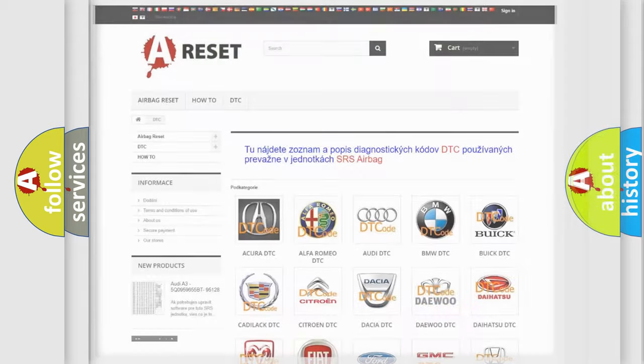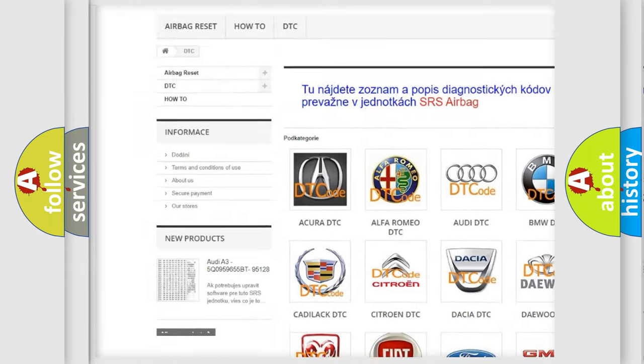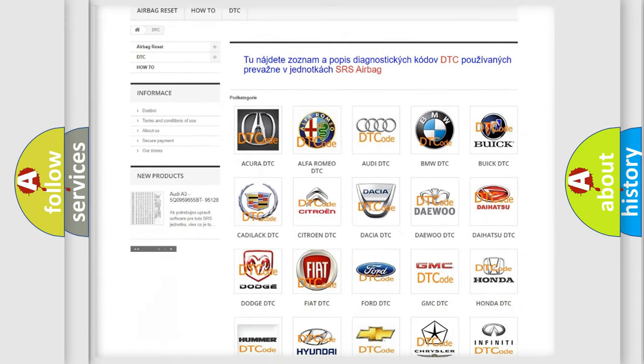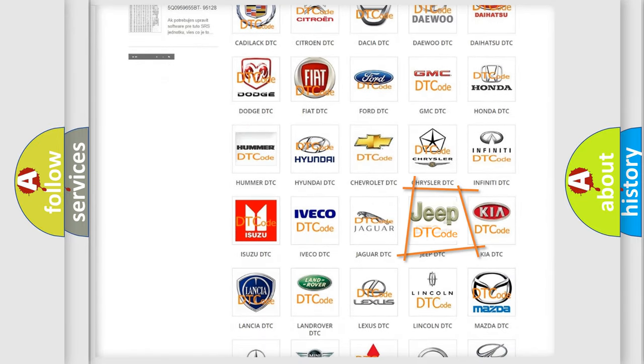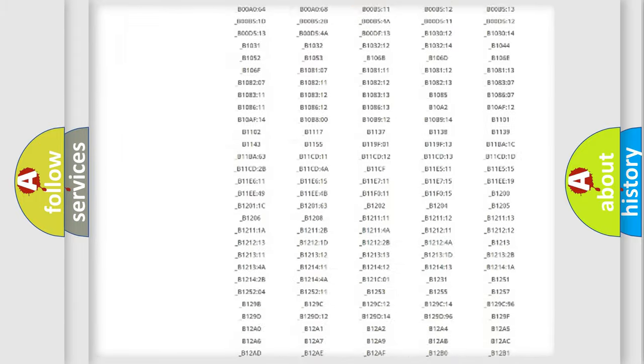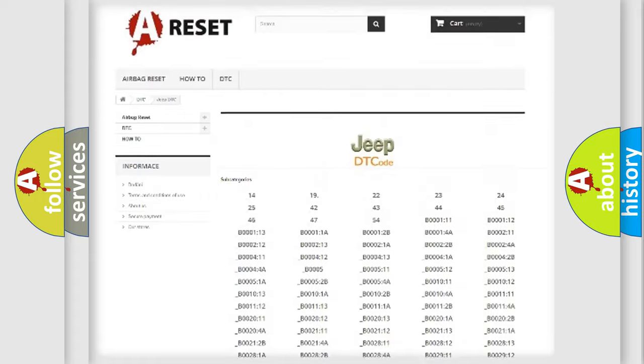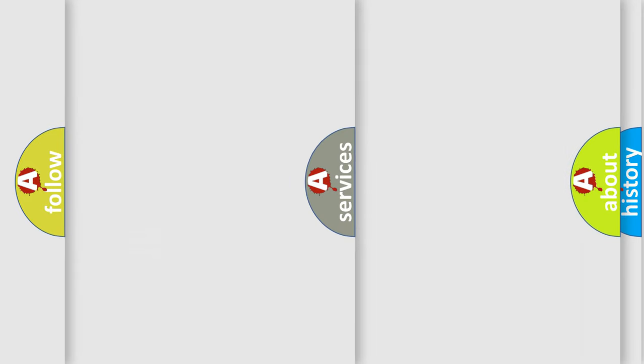Our website airbagreset.sk produces useful videos for you. You do not have to go through the OBD2 protocol anymore to know how to troubleshoot any car breakdown. You will find all the diagnostic codes that can be diagnosed in Jeep vehicles, and also many other useful things.